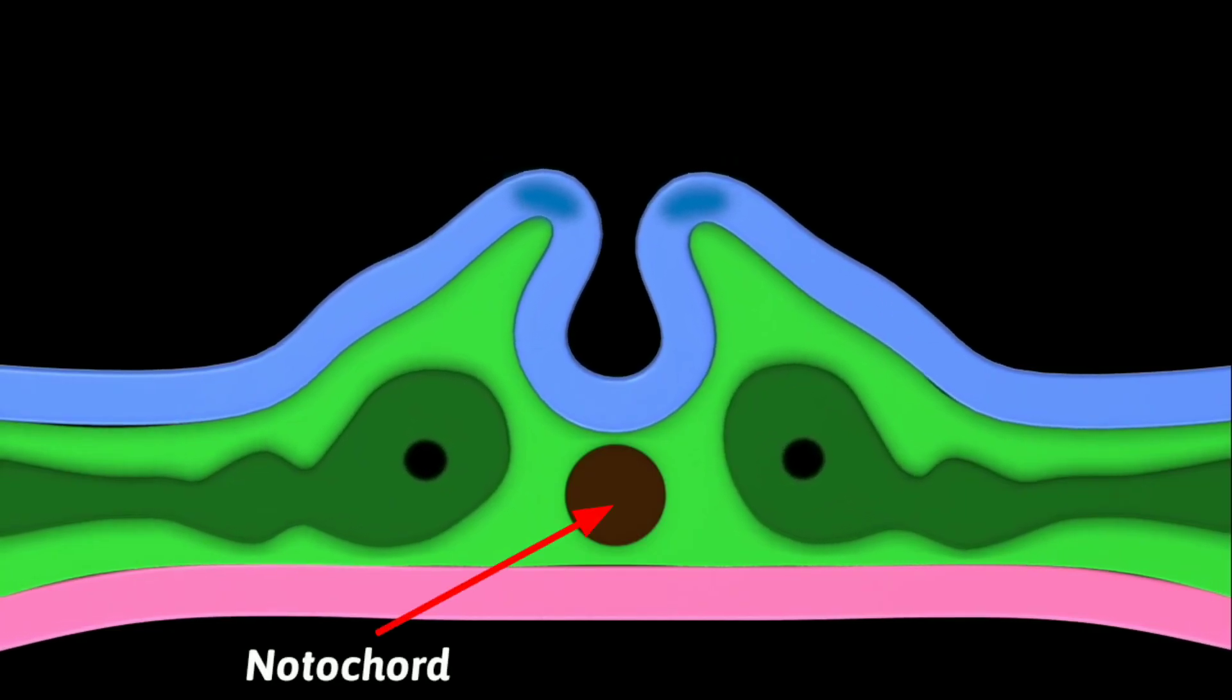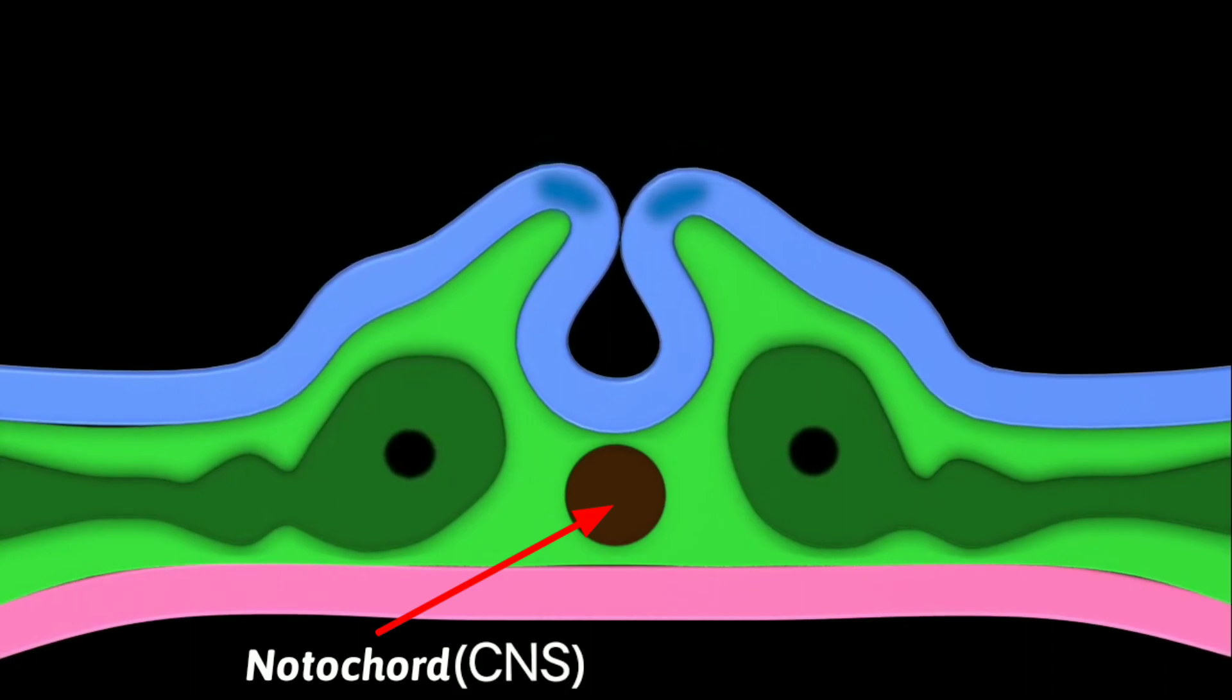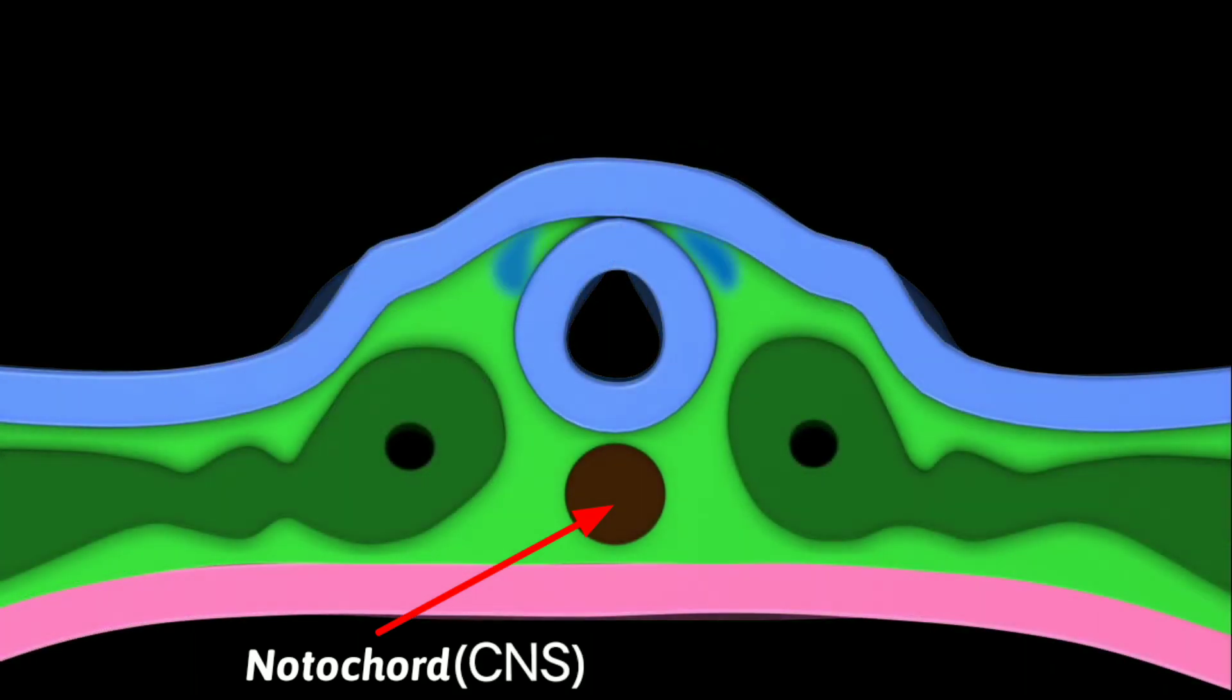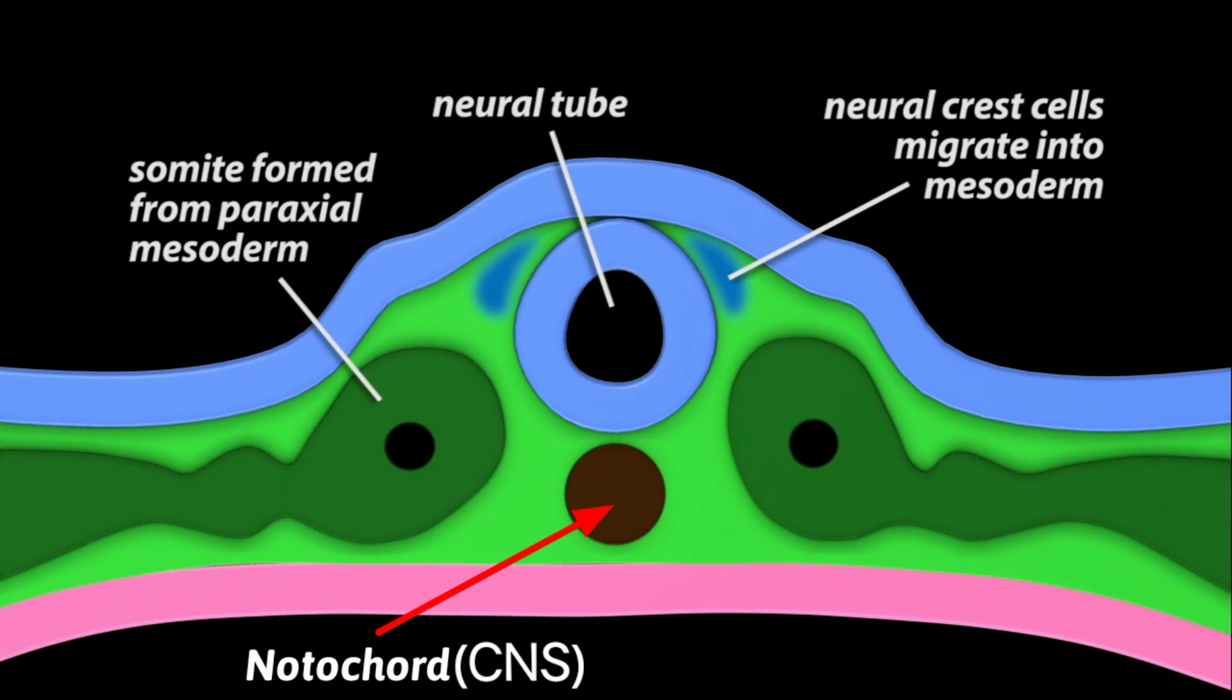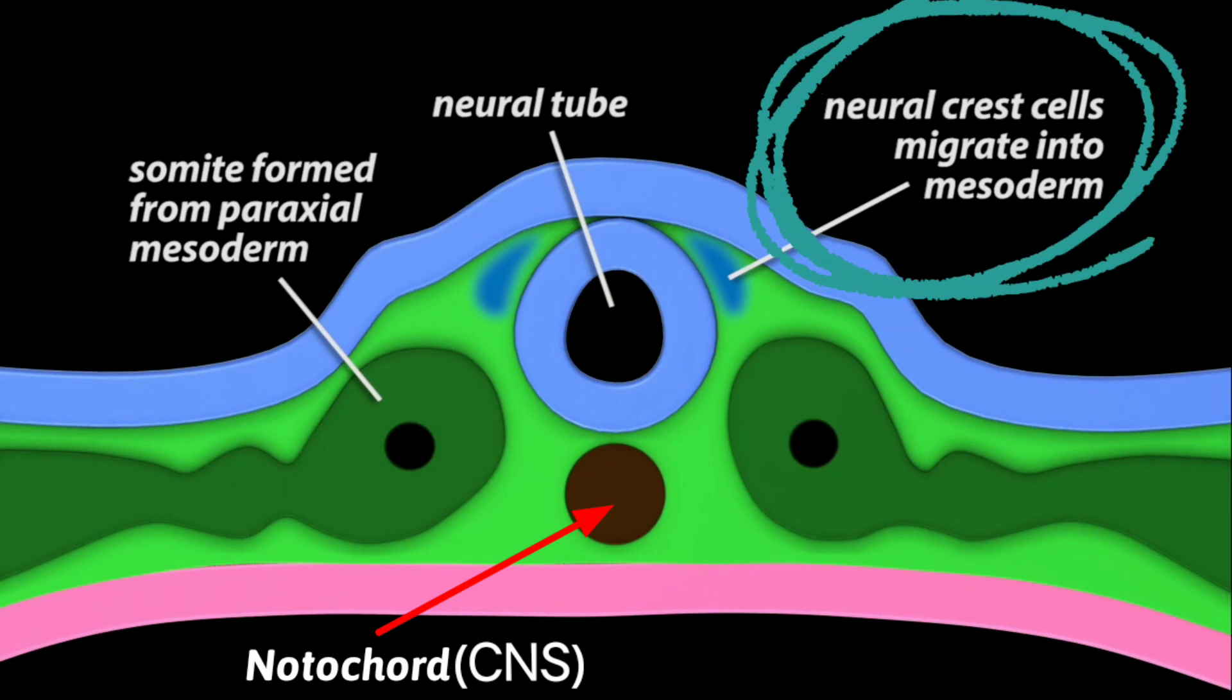Please remember, the notochord gives rise to the central nervous system, while the neural crest cells, which eventually migrate into the mesoderm, give rise to the peripheral nervous system.